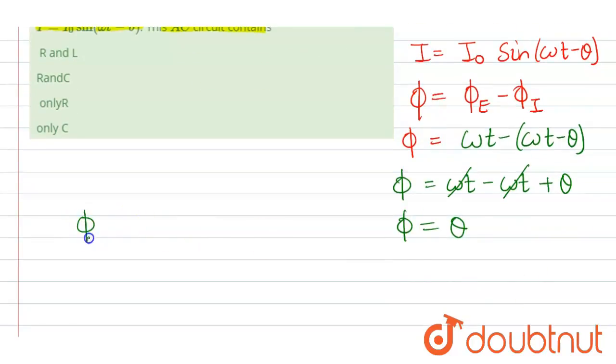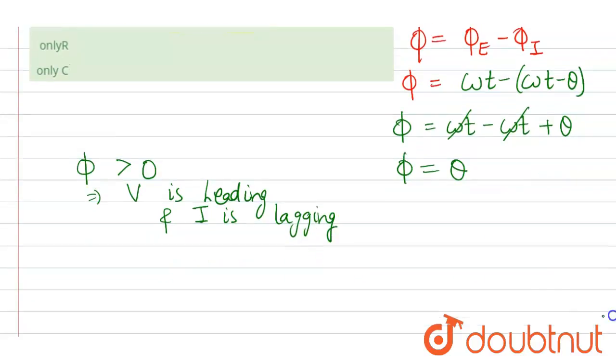Now this phase angle is greater than zero. This implies that here the voltage phase is leading and the current is lagging. So that means here it is an inductive circuit.